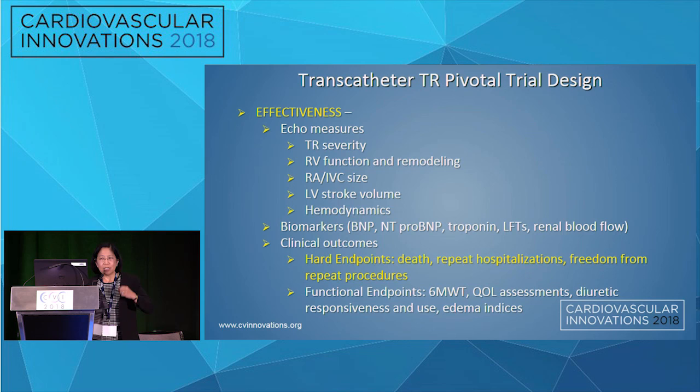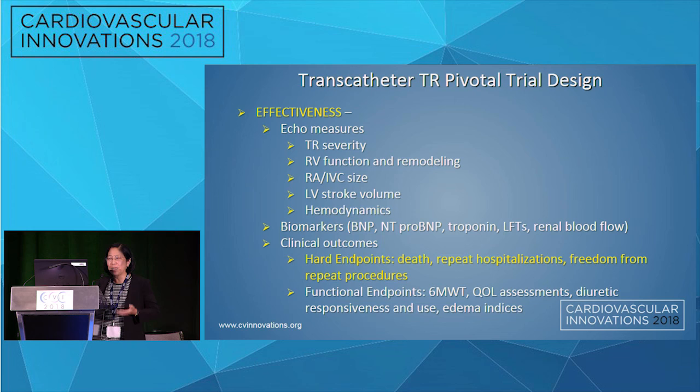For pivotal trial design: we're looking at the same effectiveness by echo, though we are learning more about RV function and remodeling. Biomarkers are needed to figure out what might be effective for liver and renal function, in addition to functional endpoints. We would love to have hard endpoints, which may not include death but may include composites of death, re-hospitalization, and freedom from repeat procedures.